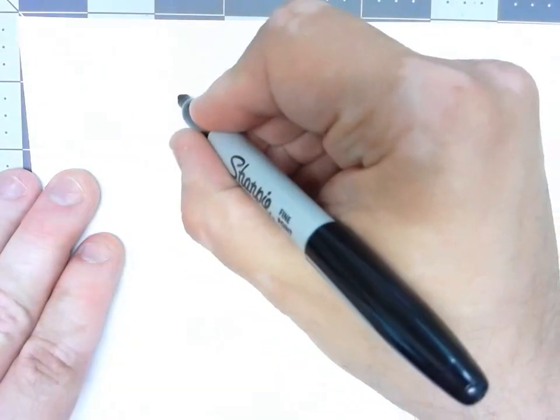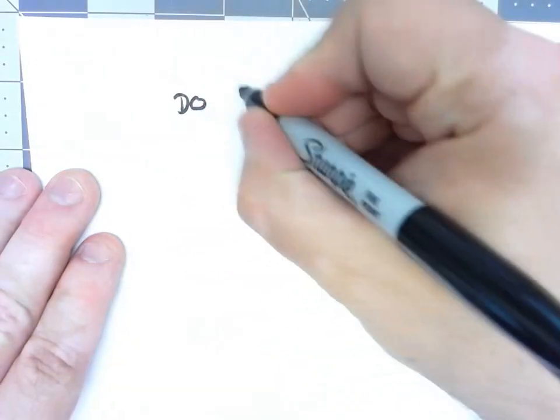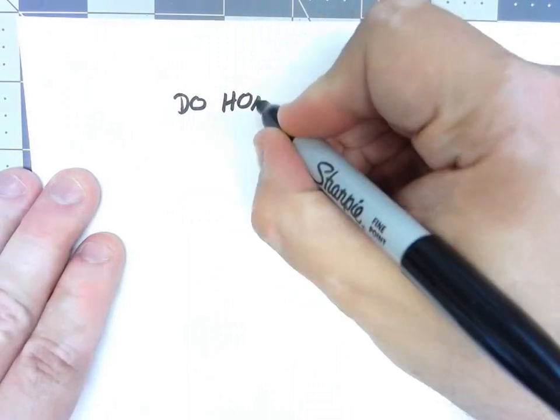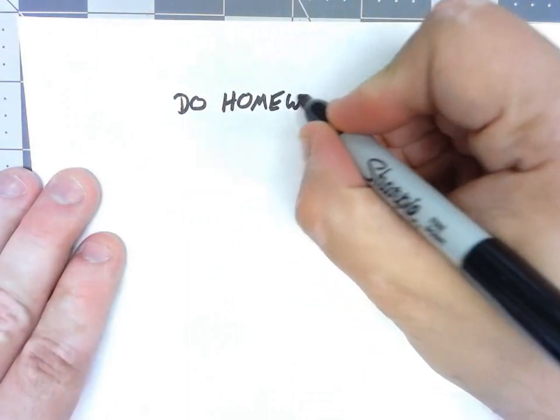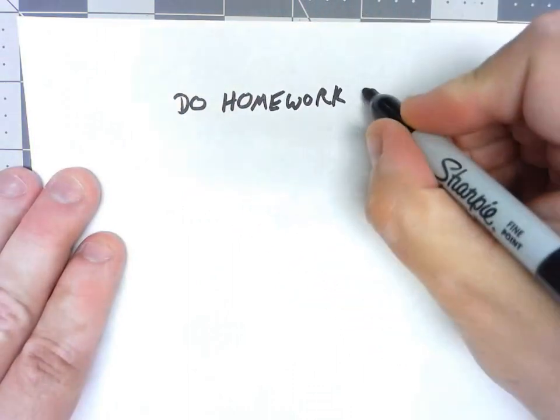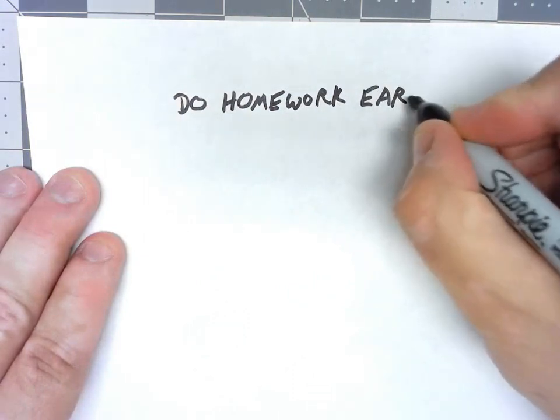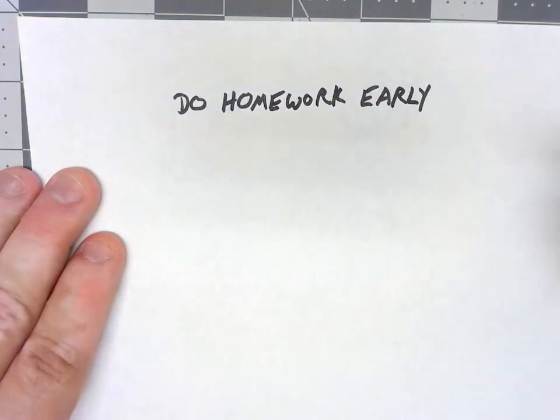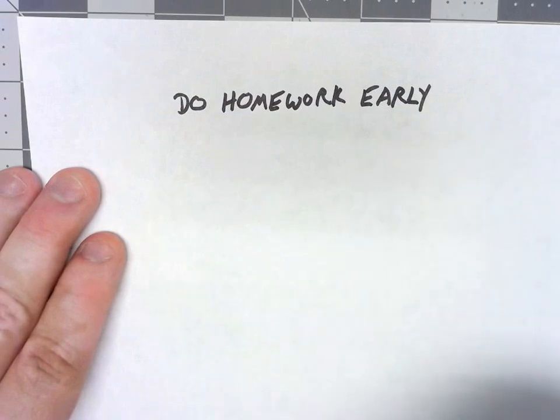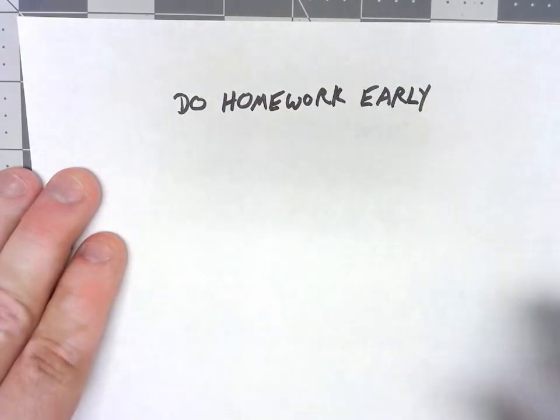But it is a little bit clever. Let's say that I wanted to encrypt a short little message, something like, do homework early. Honestly, this should probably be broadcast loud and clear rather than encrypted, but it's a good example.